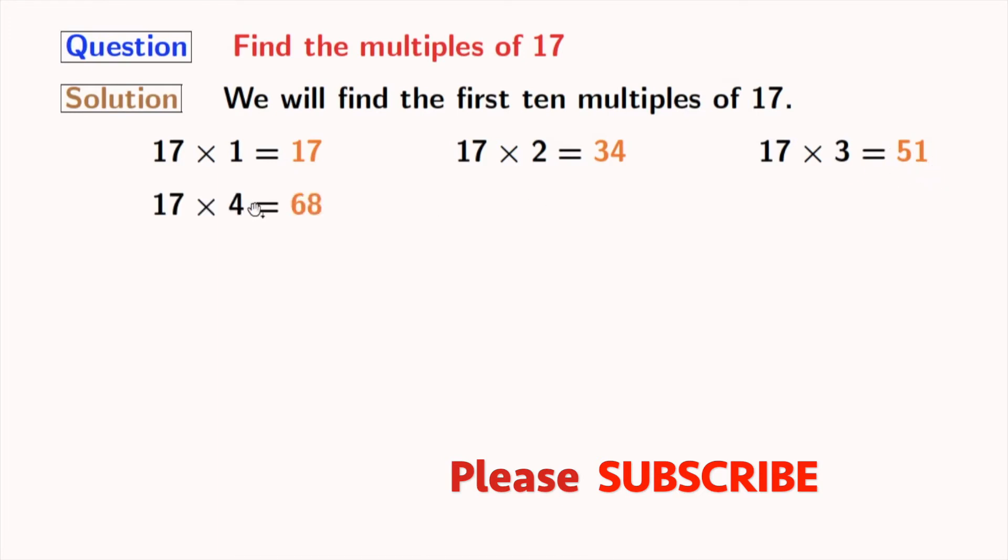Multiplication of 17 and 4 gives us 68. Multiplication of 17 and 5 gives us 85.